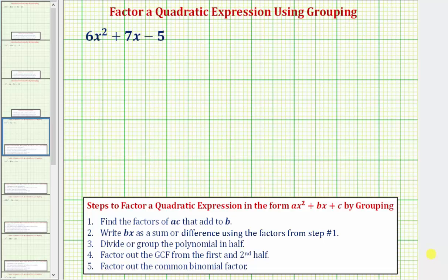Welcome to an example on how to factor a quadratic expression using the technique of factor by grouping. Our goal here is to factor 6x² + 7x - 5 using factor by grouping.